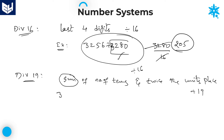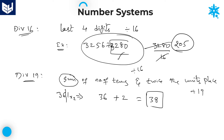Let us take a small example: 361. How many 10s are in this number? 36. Plus twice the units place: 1 times 2 equals 2. So 36 plus 2 equals 38. 38 is divisible by 19, therefore this entire number is divisible by 19. That is the divisibility rule of 19.